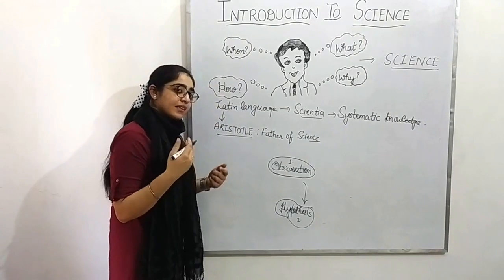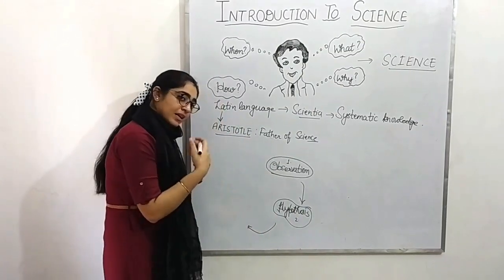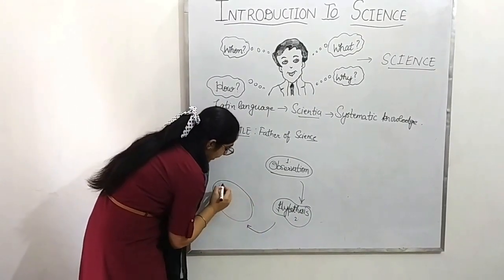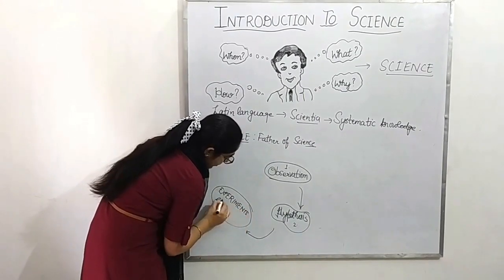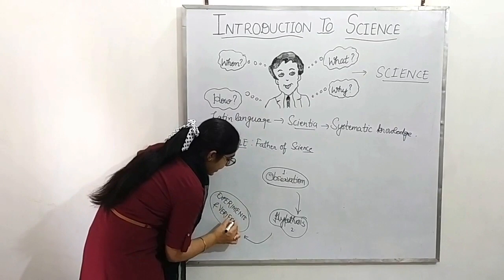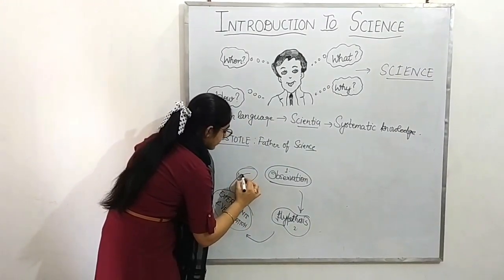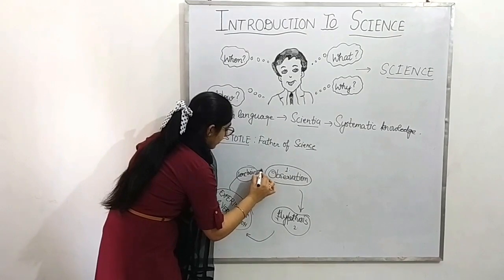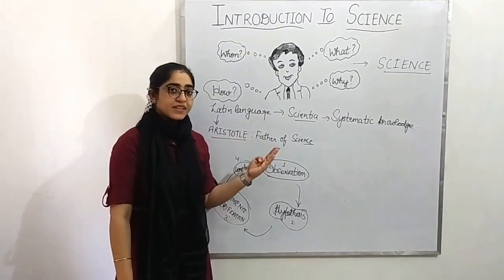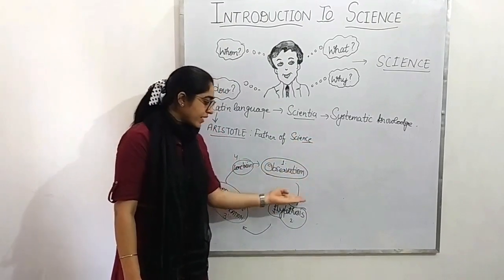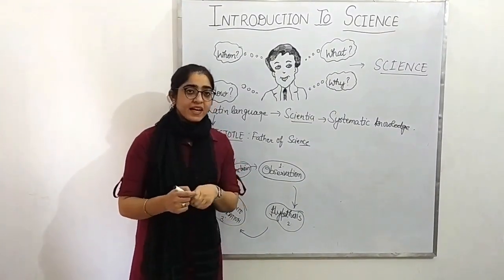The second step is hypothesis — in hypothesis, we assume how much amount of lemon and sugar is required. The third step is verification of our hypothesis, and verification is done through experimentation. And the experiment finally gives us the fourth step, that is conclusion. So these four steps make up systematic knowledge.